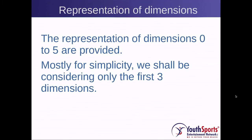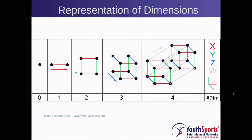We will show the representation of dimensions 0 to 5, but in most cases in physics we will be using only the first three dimensions. The 0 dimension is defined as a single point, a line is one dimension, a square is two dimensions, a cube is three dimensions, and a hypercube is four dimensions.